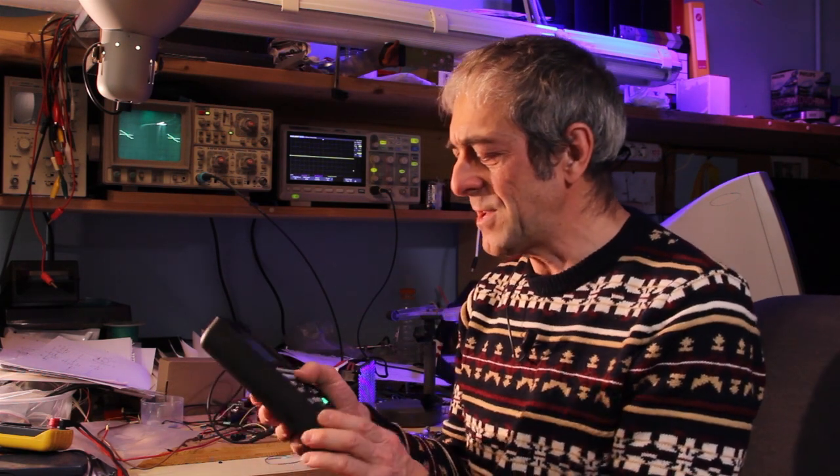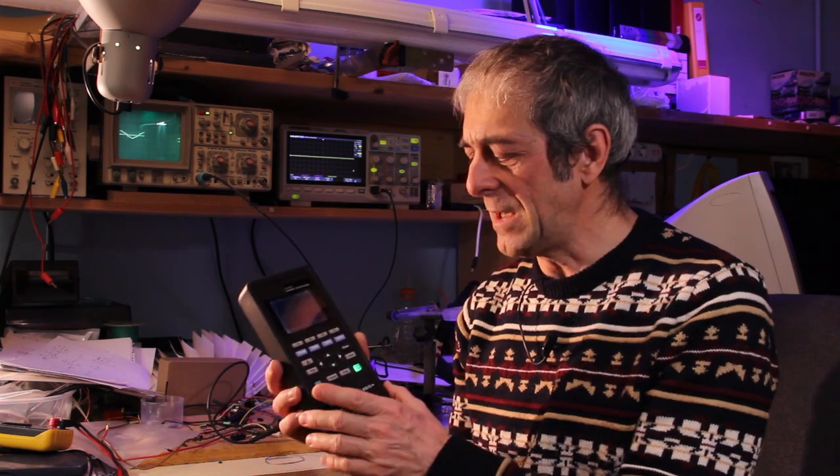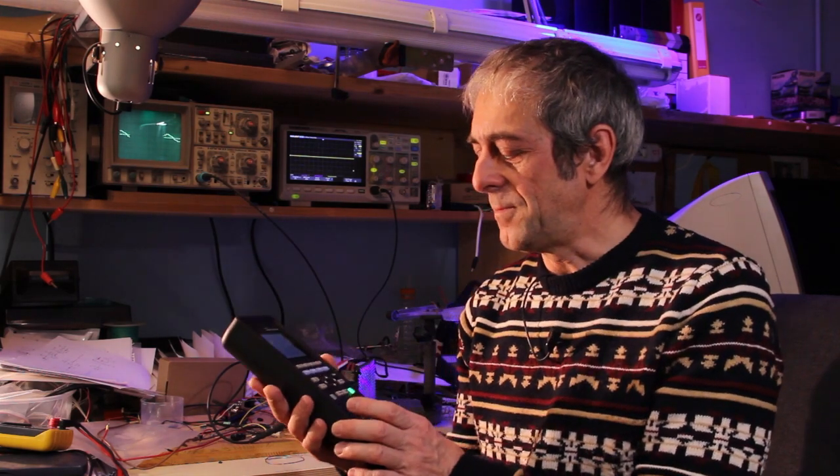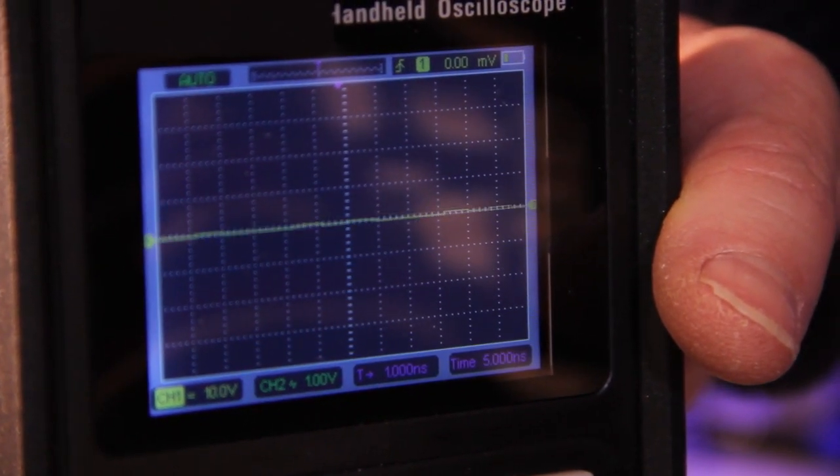And in some instruments like this one you also have a function generator that provides signals, and you can change, for example here you can change the waveform. So basically here we have three instruments in one single case. Many of these instruments have limited bandwidth, but some are quite decent because you can have instruments that have a bandwidth of 40 megahertz to even 100 or 200 megahertz, and that is really a good thing.